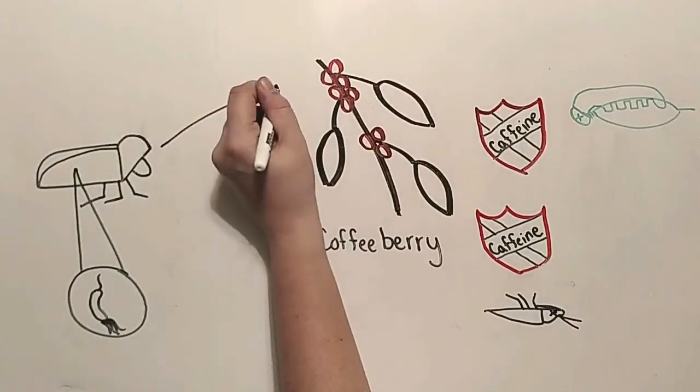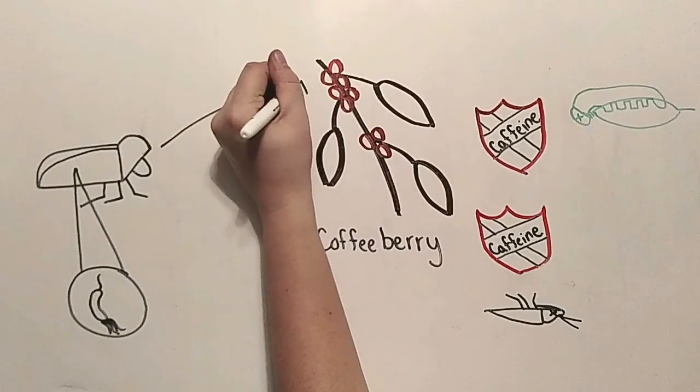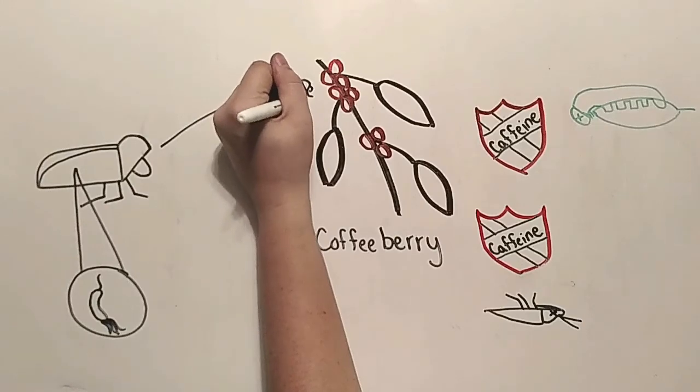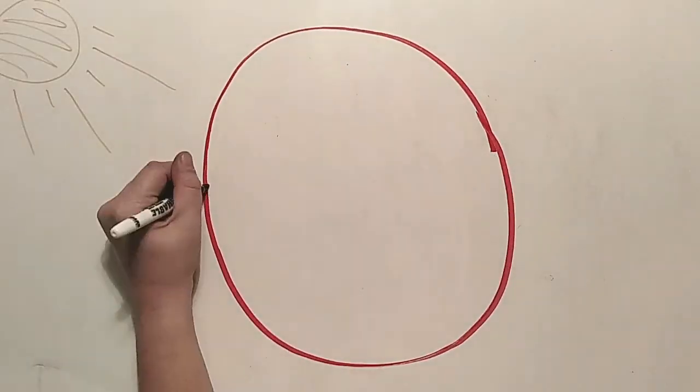What does the female beetle do once it finds a fresh berry to attack? Well, it needs to start the next generation. The female will bore into the coffee berry and lay eggs inside of it.